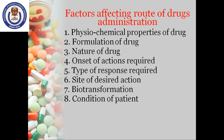Onset of action required: Several routes like oral and subcutaneous routes produce slow onset of action. Such routes are not suitable for emergency requirements. Type of response required: Some drugs produce different pharmacological effects depending on the route of administration. For example, magnesium sulfate solution given intravenously produces muscle relaxation or paralysis, whereas when administered orally, it induces purgation.